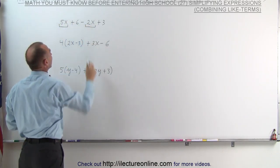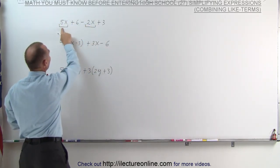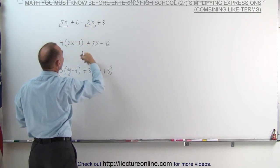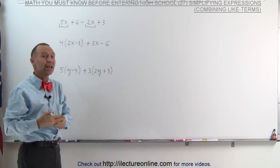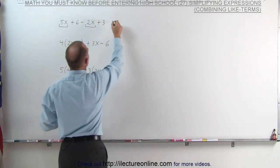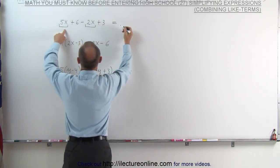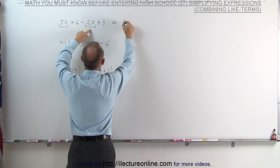And we combine like terms. In other words, 5x minus 2x is 3x. If you have 5x's and then you have to subtract 2x's from that, you're left with 3x's. So this can be simplified to 5x minus 2x, which is 3x.